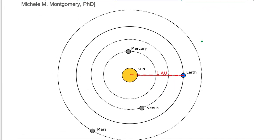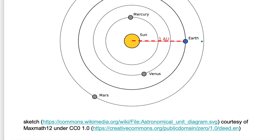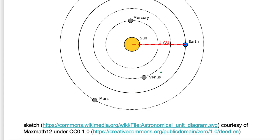Let's take a look at this astronomical unit. Here we're looking at a sketch of the inner solar system. We see Mercury, Venus, Earth, and Mars, and their orbits around the Sun.